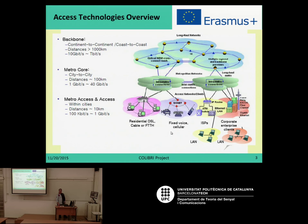And finally, what is closer to the user is the metro and access networks, usually within the cities, with much shorter distances in the range of 10 to 20 kilometers, and covering data rates which previously were very small, but nowadays approaching 30 megabits, 100 megabits, and even 1 gigabit per second.